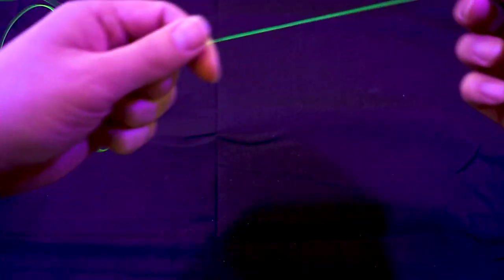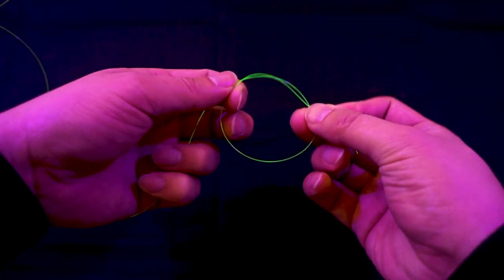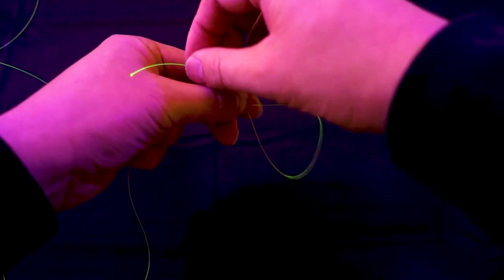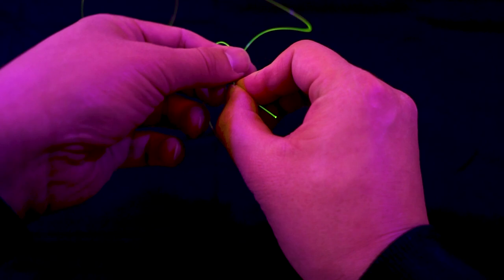Well, instead of doing that, what you want to do is create your loop going this way. And then while you have the loop this way, instead of tying your knot this way, you tie your knot with the tag end facing this way into the circle.